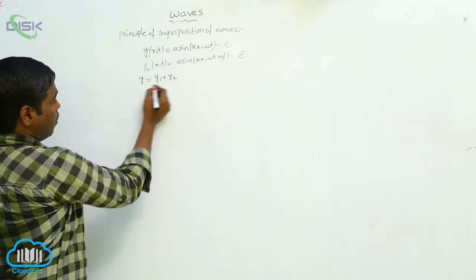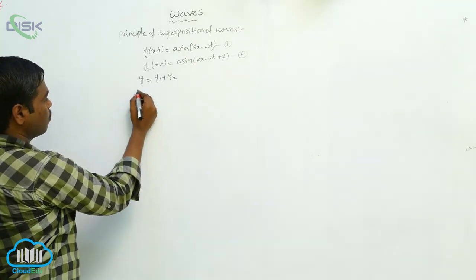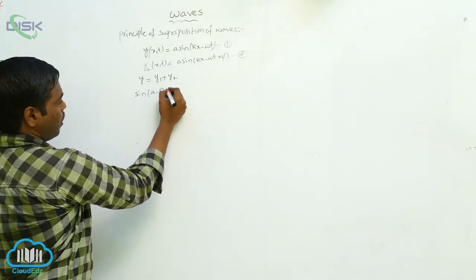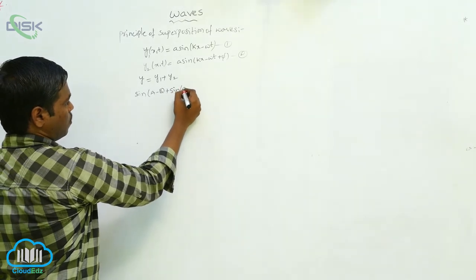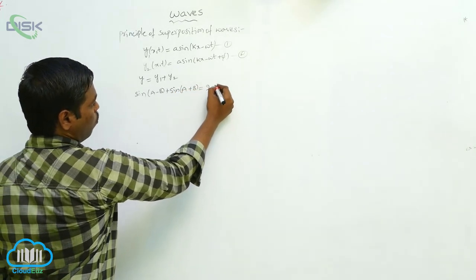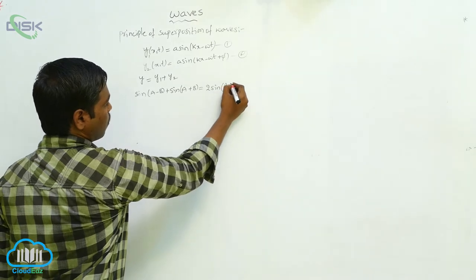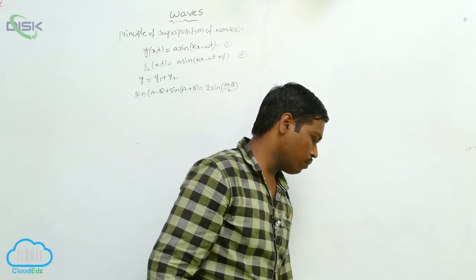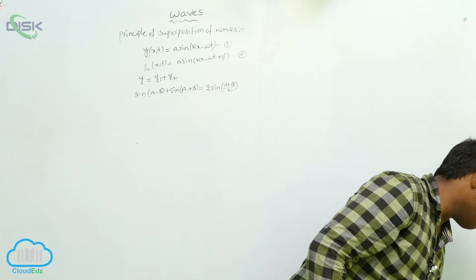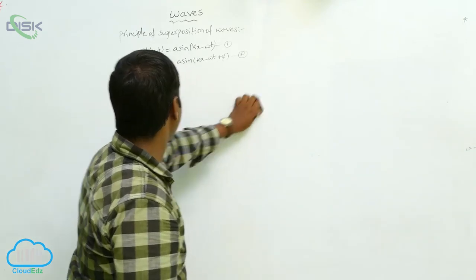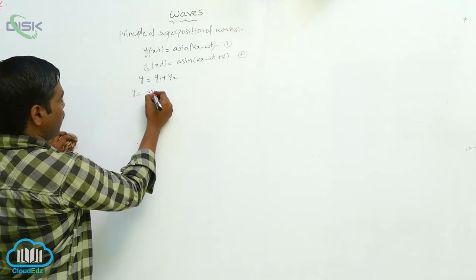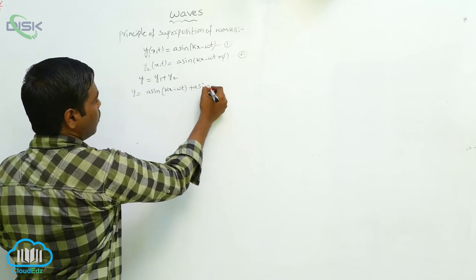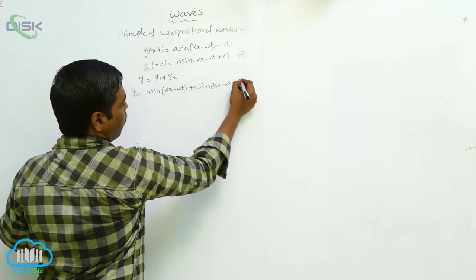By the trigonometric formula: sin A + sin B = 2 sin((A+B)/2) cos((A−B)/2). So y = a sin(kx − ωt) + a sin(kx − ωt + φ).